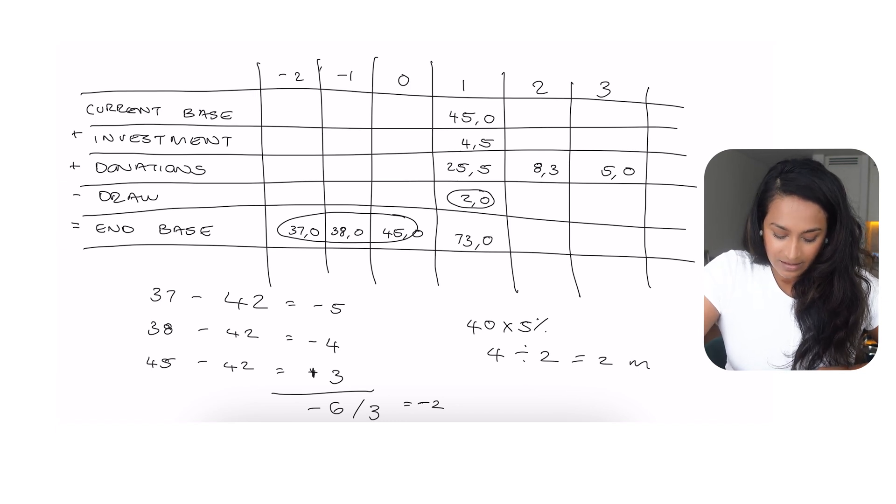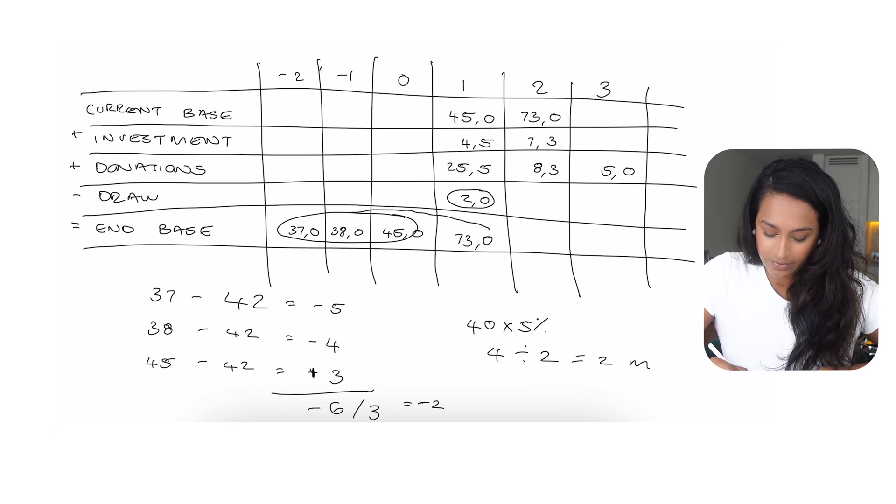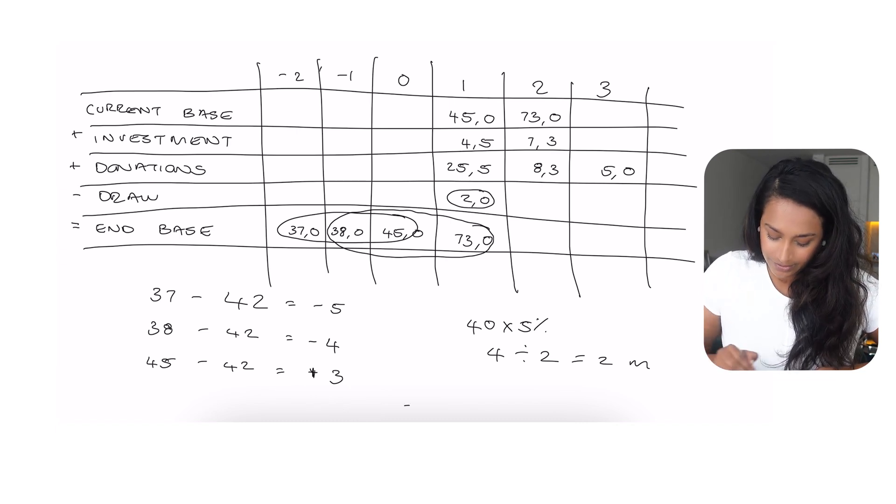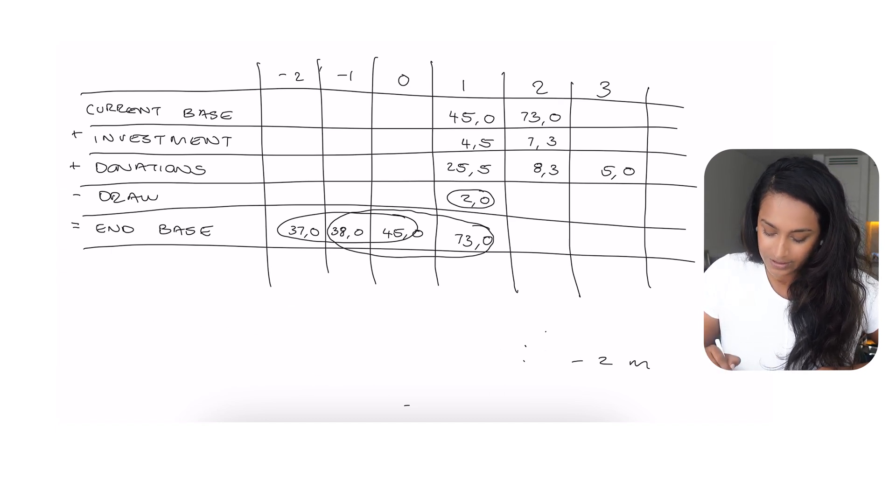This then becomes the current base of year two, and I'm going to take 10% of that to get the investment return, which is just 7.3 million. We have 8.3 million in donations, and now we need to calculate the draw. Again here, we need the average of the prior three years, and we need to multiply that by 5%. So let me clear out some space here, and we can try out the residual method one last time.